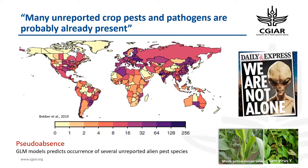Those are examples where diseases have caused major epidemics. There are many unreported crop pests and pathogens already introduced in many countries but yet to be recognized — either they have not caused a major epidemic or they are unnoticed, which is called pseudo-absence. A modeling study predicts the occurrence of several unreported alien pest species. On this map, deep purple indicates a higher number of unrecognized pathogens. Almost all countries are expected to have at least an average of 20 unrecognized pathogens that have been introduced but not yet recognized.